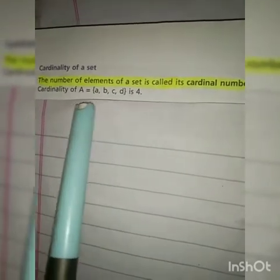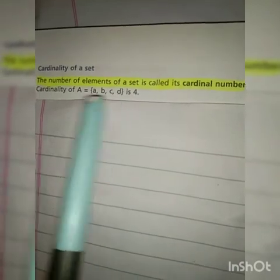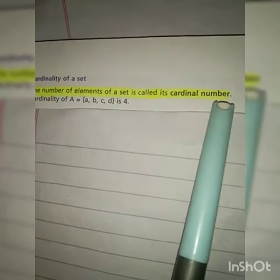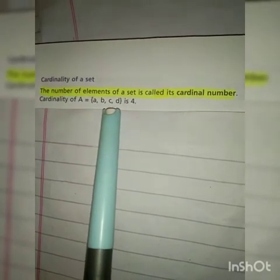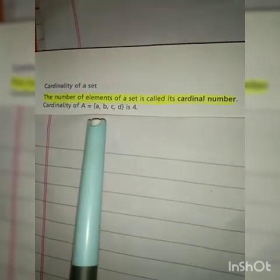Next ہمارے پاس cardinality of a set ہے۔ Cardinality کسے کہتے ہیں - جو ہمارے پاس کوئی بھی set ہو اس کے elements کی جو تعداد ہوتی ہے وہ اس کی cardinality کہلاتی ہے۔ Definition: The number of elements of a set is called its cardinal number۔ مثال کے طور پر Set A = {a, b, c, d} ہے تو اس کی cardinality یعنی cardinal number کیا ہوگا - elements count کریں: one, two, three, four - تو cardinal number چار ہے۔